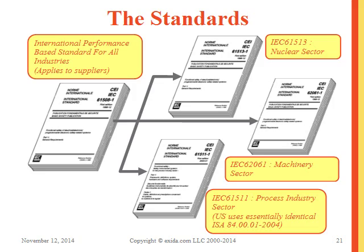IEC 61508 is commonly referred to as the umbrella standard — it applies to all industries and mostly to suppliers. It was broken into multiple sector-specific standards: the nuclear section is 61513, the machinery sector is 62061, and the process industry sector is 61511, which we'll dive into more today.